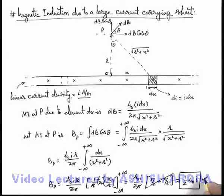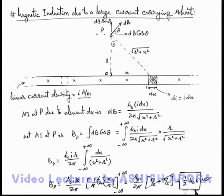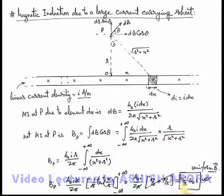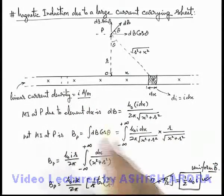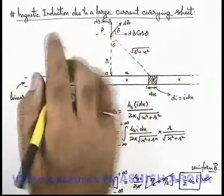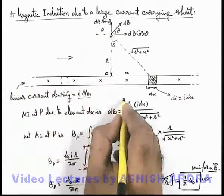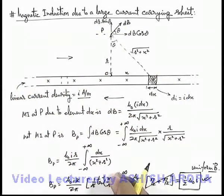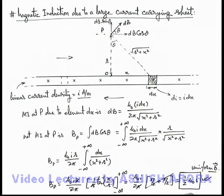This is again a useful result you can keep in mind, which is giving us a magnetic induction which is uniform. You can see this is a uniform magnetic induction above and below the large current carrying sheet in opposite directions. Above the sheet it'll be in rightward direction and below the sheet it'll be in leftward direction, and it remains uniform.